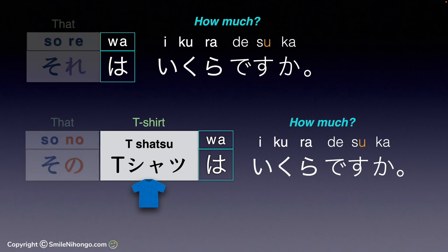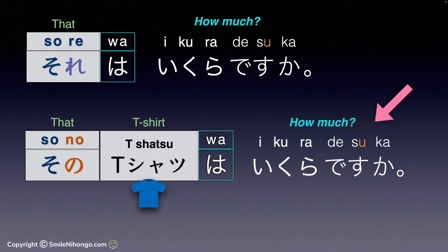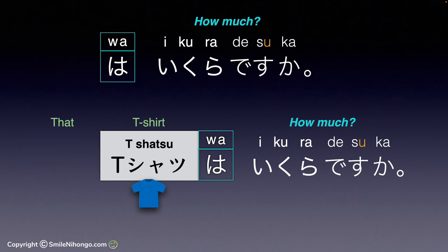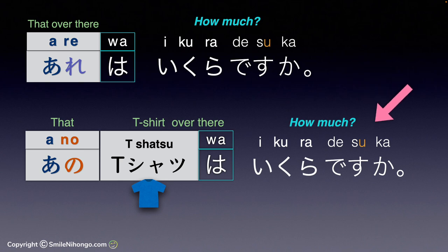The same applies to this pair: 'How much is that?' is それはいくらですか? And 'How much is that T-shirt?' is そのティーシャツはいくらですか? 'How much is that over there?' is あれはいくらですか? And 'How much is that T-shirt over there?' is あのティーシャツはいくらですか?